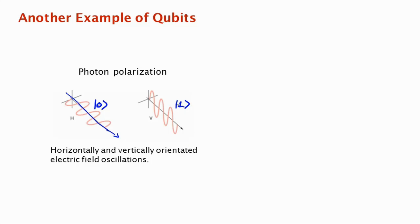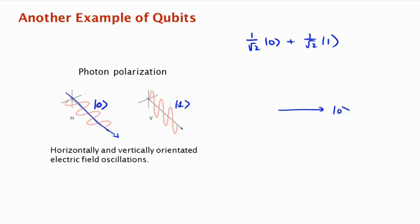But what happens if it's diagonal — if it's at a 45-degree angle? Then the state of polarization, the state of this qubit, is 1 over square root 2 times |0⟩ plus 1 over square root 2 times |1⟩. So basically, what you get is a qubit where this is horizontal polarization.